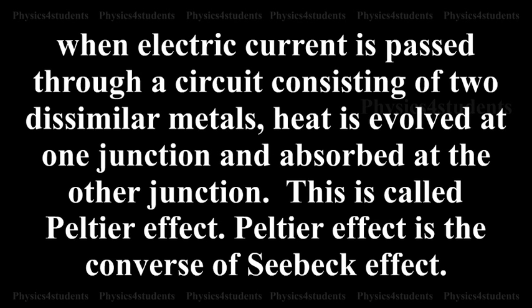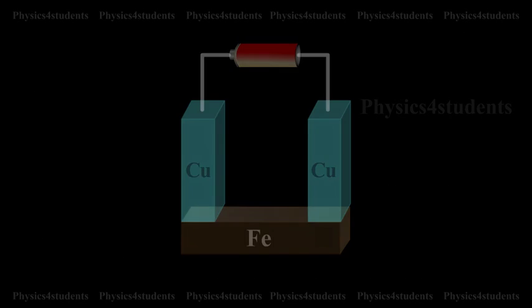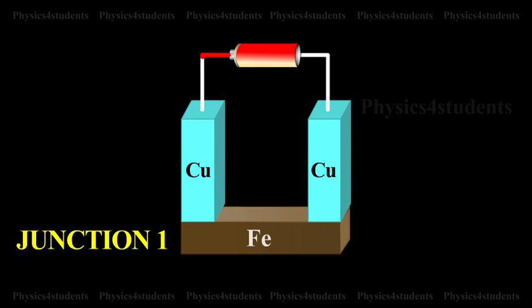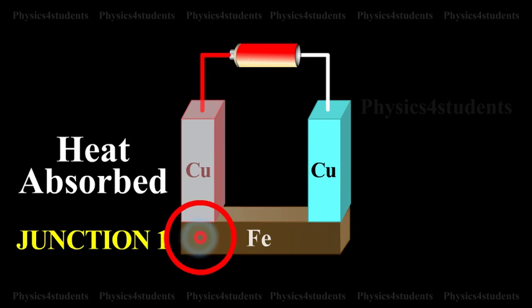Peltier Effect is the converse of Seebeck Effect. In a CuFe thermocouple, or copper-iron thermocouple, at junction 1, where the current flows from copper to iron, heat is absorbed, so it gets cooled.